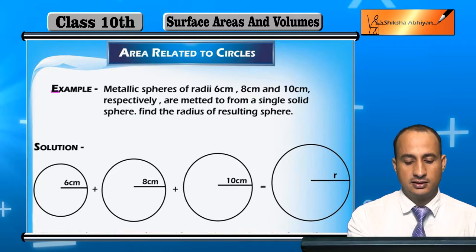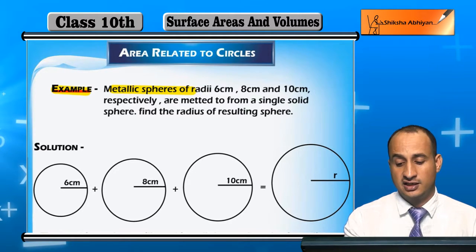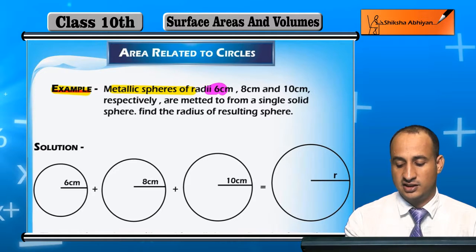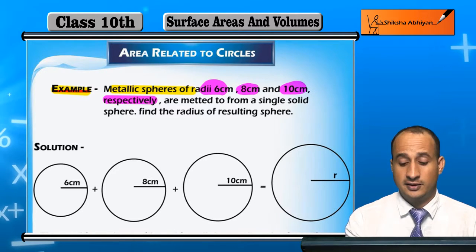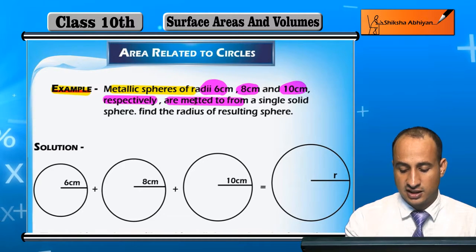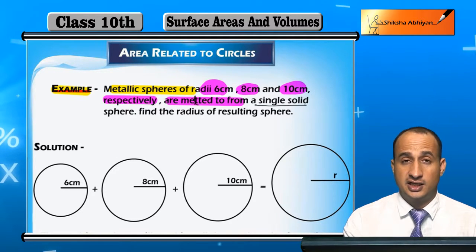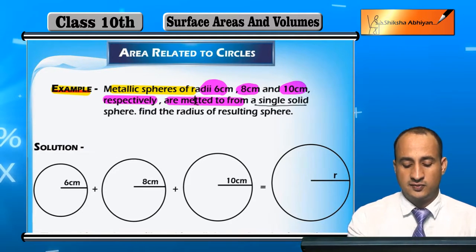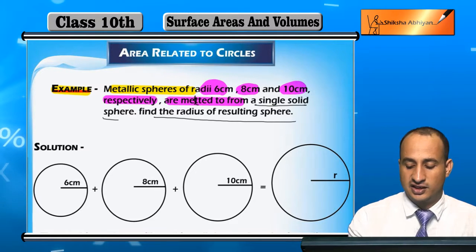The example is: three metallic spheres have radii 6 cm, 8 cm, and 10 cm respectively. The three spheres are melted to form a single solid. Find the radius of the resulting sphere.